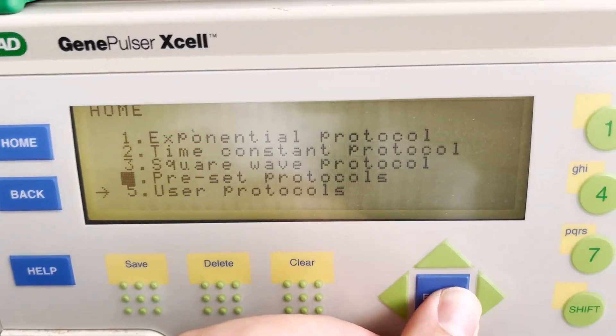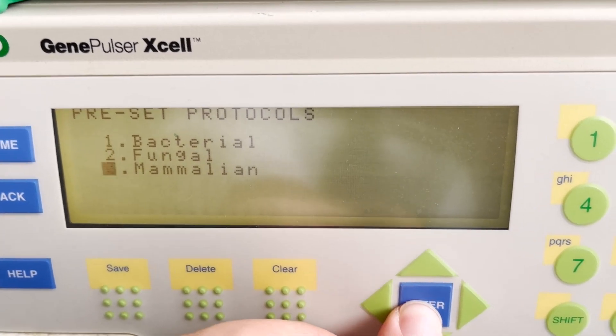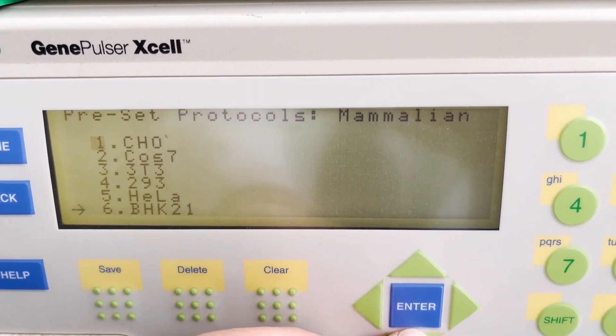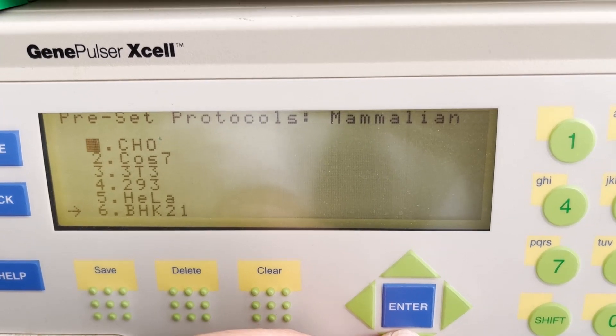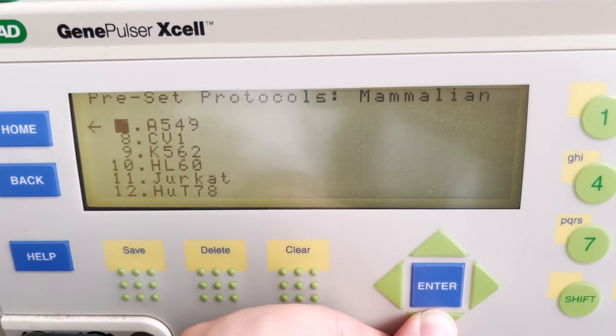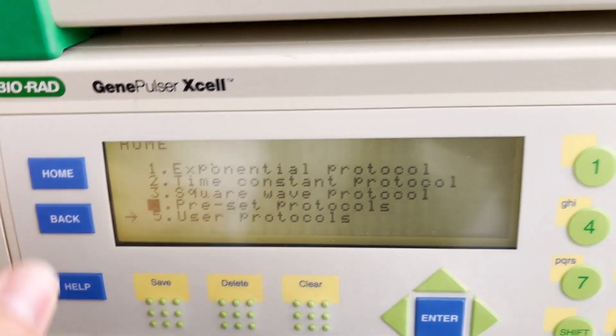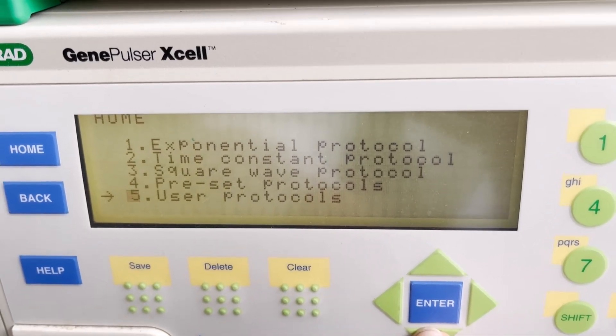There's also preset protocols for bacterial, fungal, and mammalian. Mammalian falls under the application that many people will use because they fit with the eukaryotic module that's on this machine currently. You can see for some common types of cells there are protocols defined, and you can modify those protocols and save them as a user-based protocol.